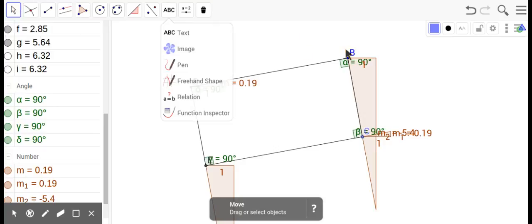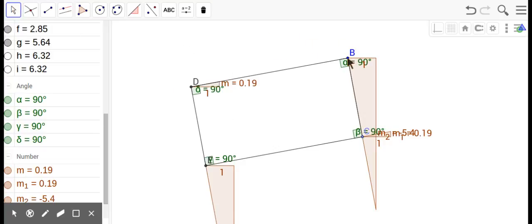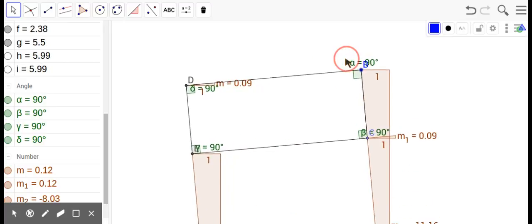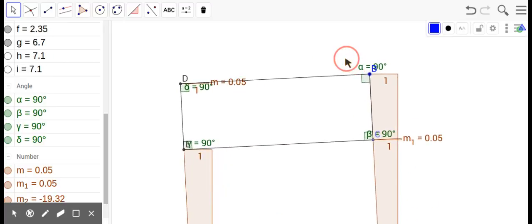All the angles are 90, so that makes this a special parallelogram, and we call that a rectangle. Sides of the same, opposite sides are congruent—that's just the property of a parallelogram.